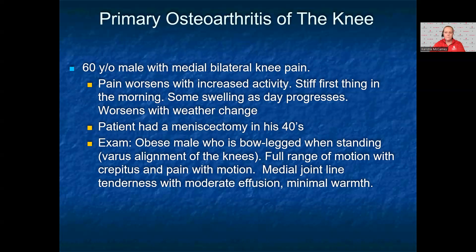A 60-year-old male presents with bilateral medial knee pain that gets worse with increased activity. He states he feels stiff first thing in the morning, his knees swell as the day progresses, and his pain is worse with weather changes. He has a history of a meniscectomy in his 40s but doesn't remember which side. On exam, he is a pleasant obese male. He is bow-legged, which is a varus alignment of the knees. He has full range of motion with crepitus and pain with motion, medial joint line tenderness, a moderate effusion, and minimal warmth of his knee.